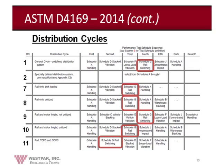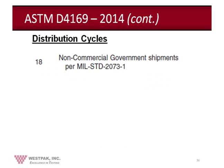Distribution cycle 2 is a user-specified environment where you can tailor your testing by choosing different schedules and different orders as you see fit. The updated Schedule H should also be acknowledged in addition to its effect on distribution cycle 18, which is utilized for non-commercial government shipments.